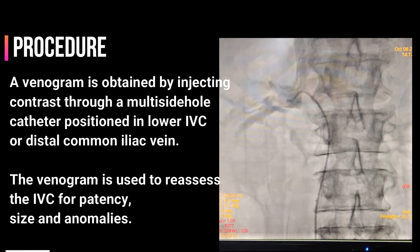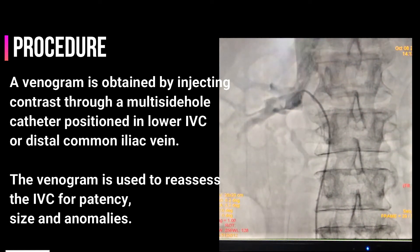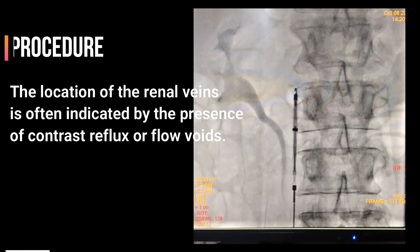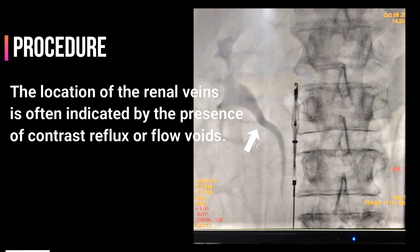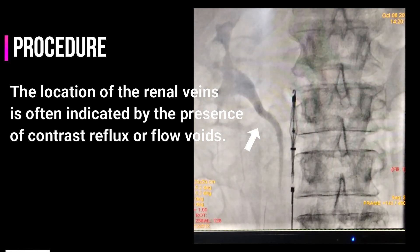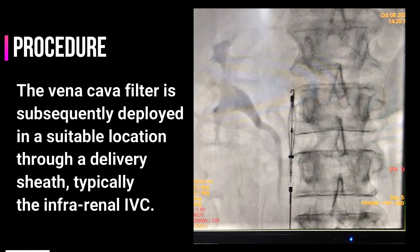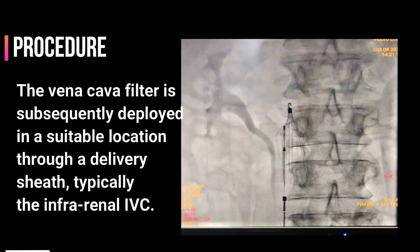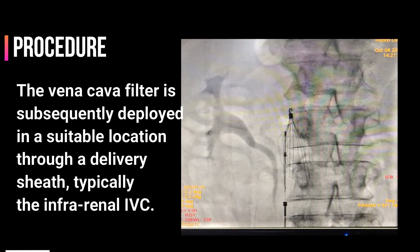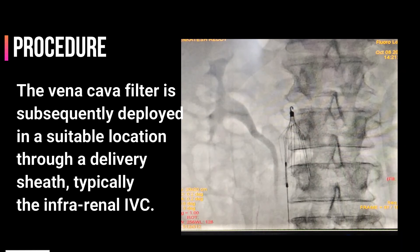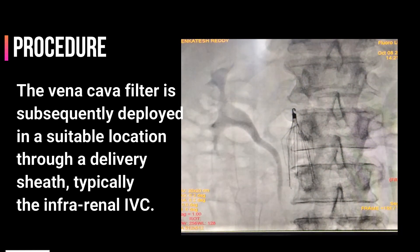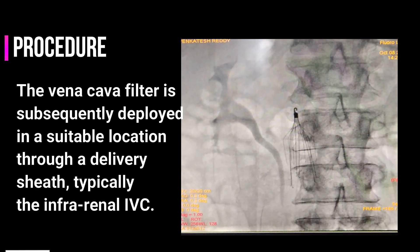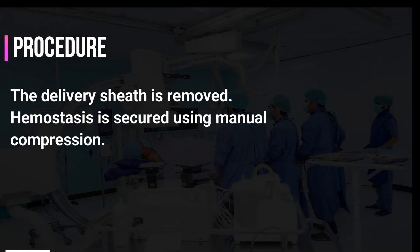The venogram is used to reassess the IVC for patency, size, and anomalies. The location of the renal veins is often indicated by the presence of contrast reflux or flow voids. The venous access is dilated using a dilator. The vena cava filter is subsequently deployed in a suitable location through a delivery sheath, typically the infra-renal IVC. Another venogram is obtained to ensure satisfactory deployment of the filter. The delivery sheath is removed and hemostasis is secured using manual compression.